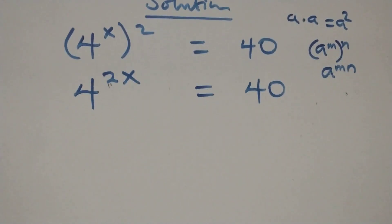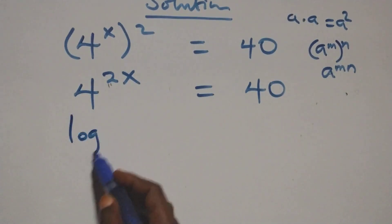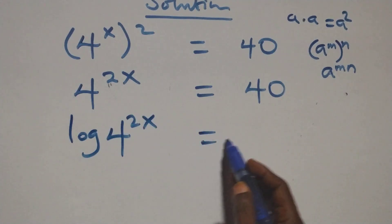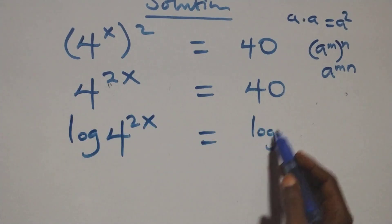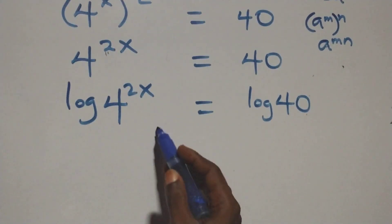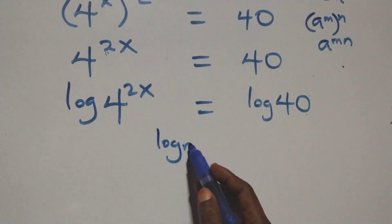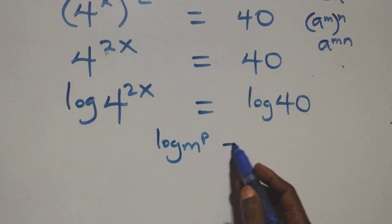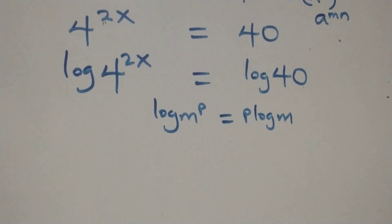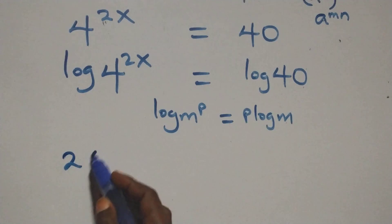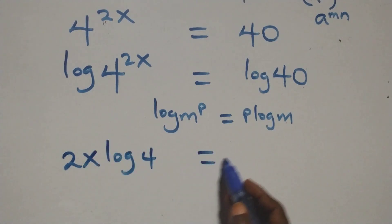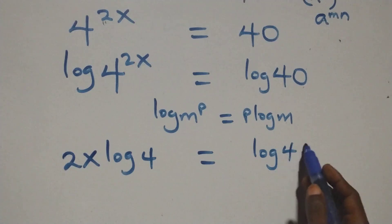The next step: we take the log on both sides. That is, log of 4 raised to power 2x equals log 40. At this next step we apply the power rule of logarithm: log m raised to power p is the same thing as p log m. That is, 2x log 4 equals log 40.